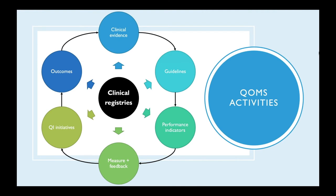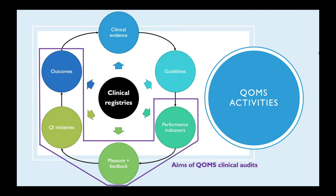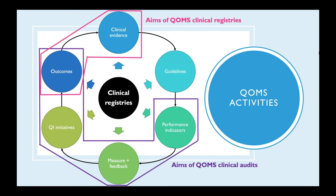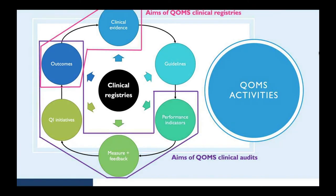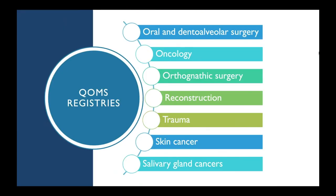How does QWAMS propose to achieve its objectives? QWAMS includes a series of clinical registries, some run as clinical audits to measure the quality of care provided by healthcare professionals, while others address issues in specific areas of OMFS practice. Here are the OMFS subspecialties so far included in QWAMS.